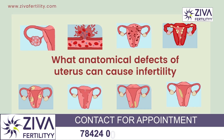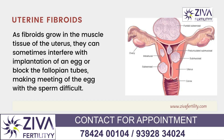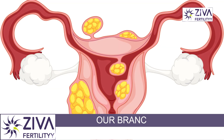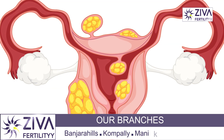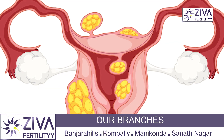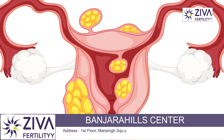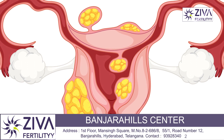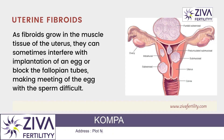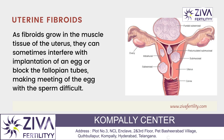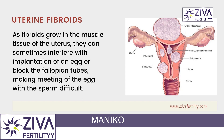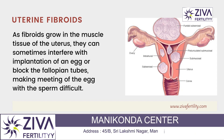Let's look at some of the most common. Uterine fibroids are benign tumors that grow in the muscle tissue of the uterus. Depending on their size and location, they can interfere with the implantation of a fertilized egg or block the fallopian tubes, making it difficult for the egg and sperm to meet.